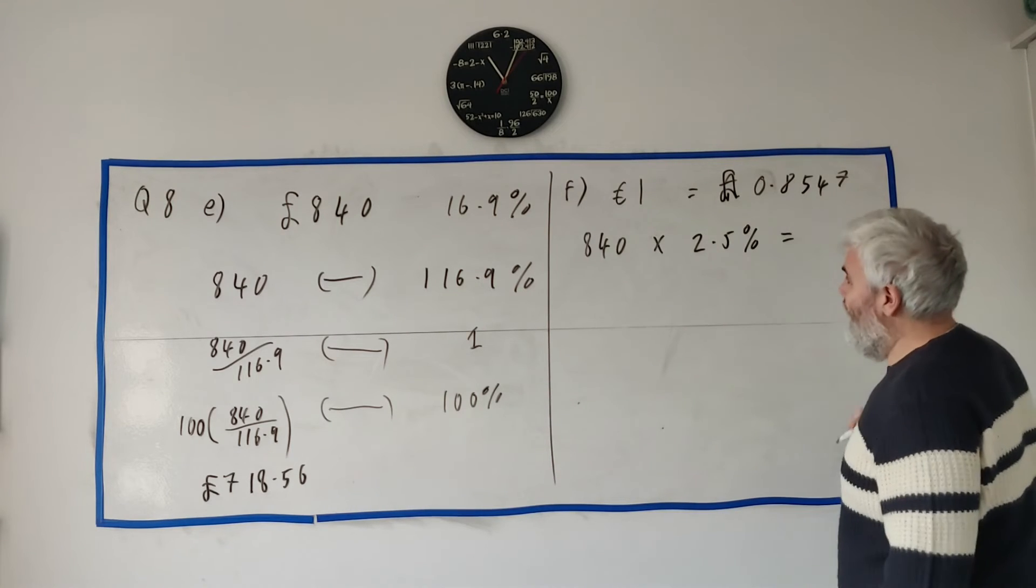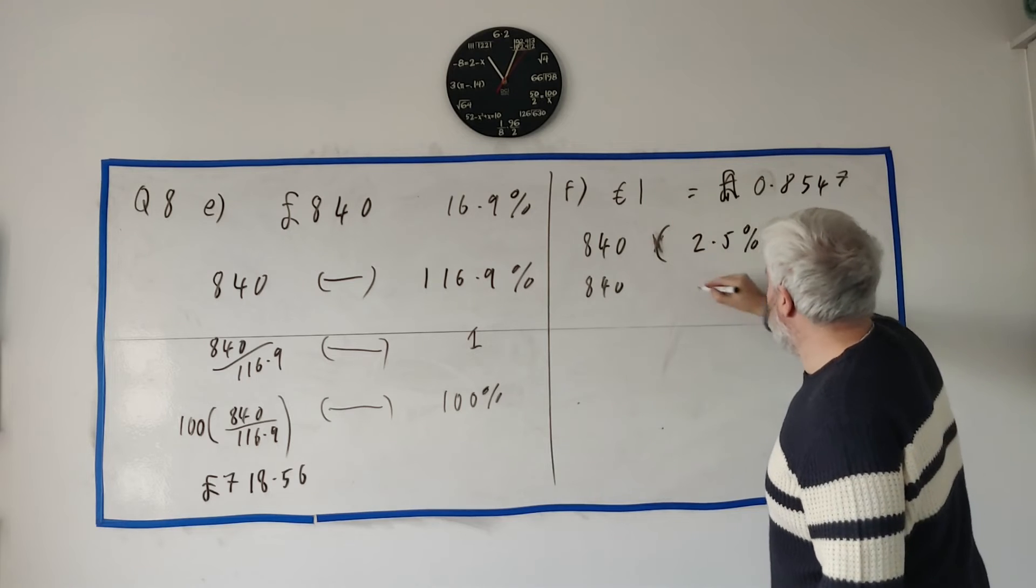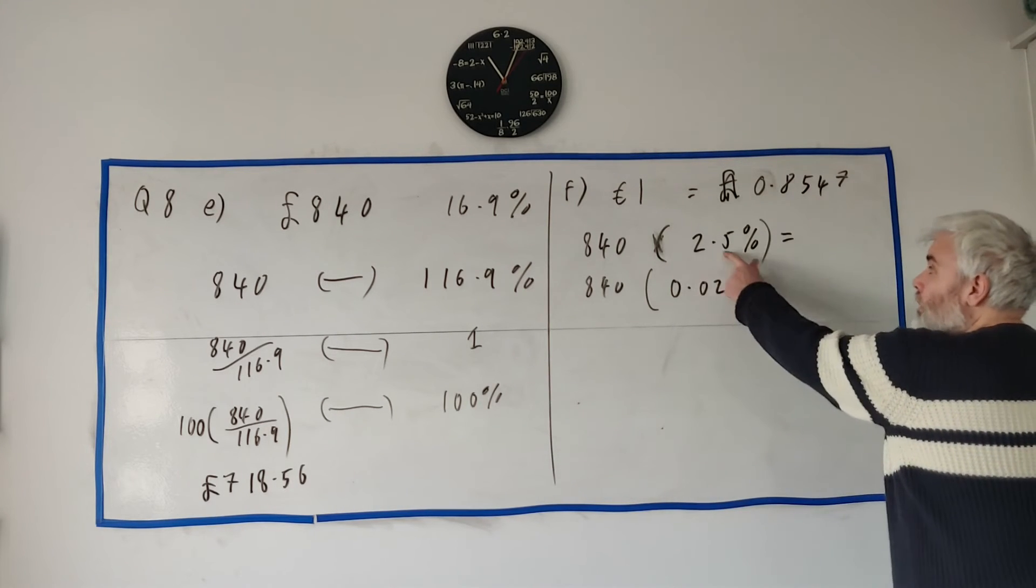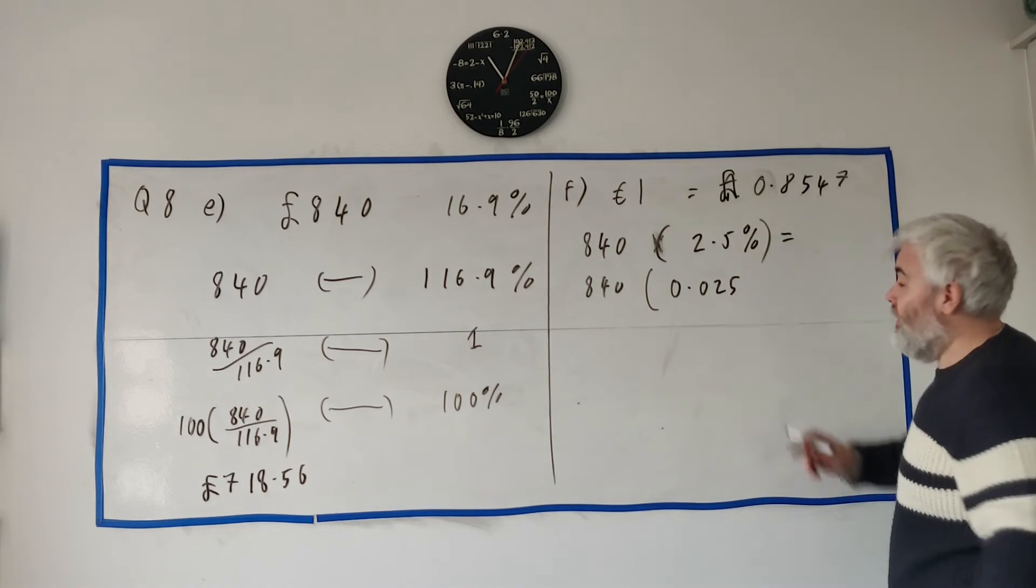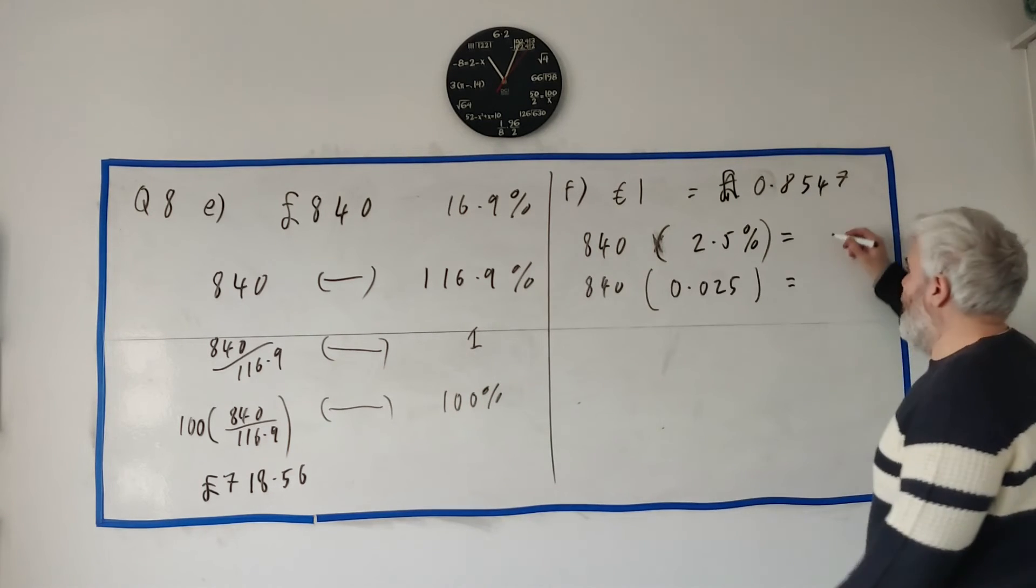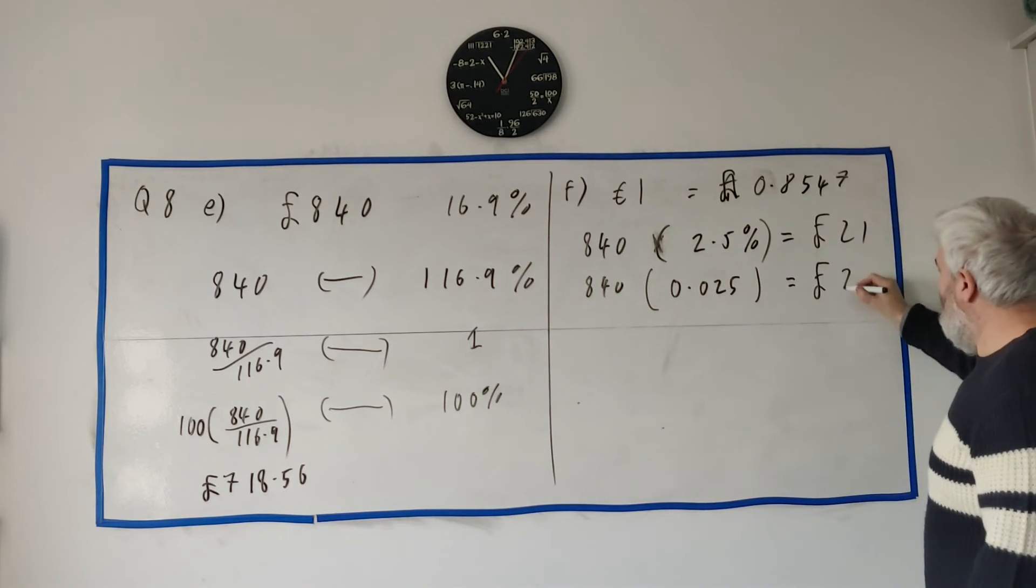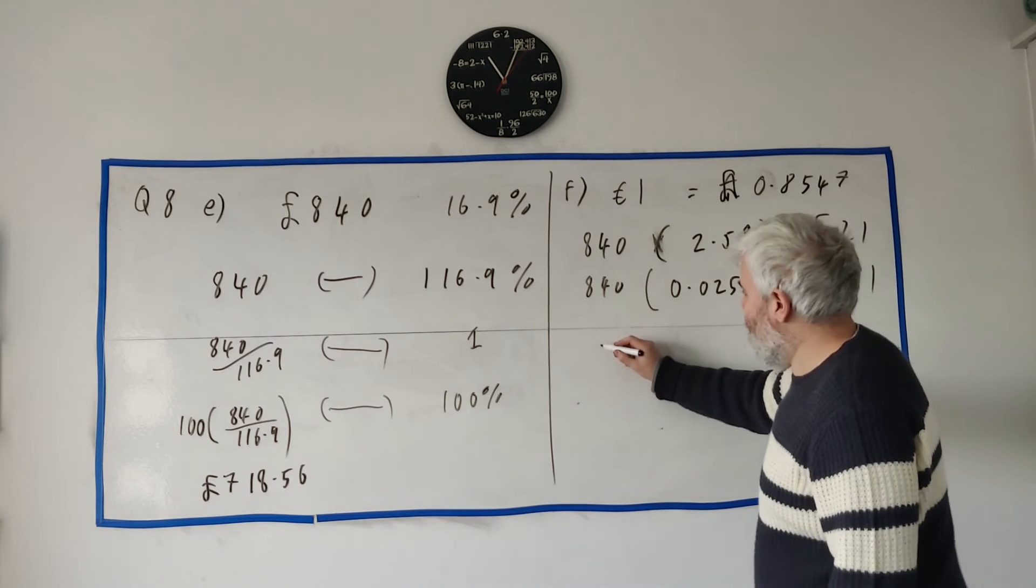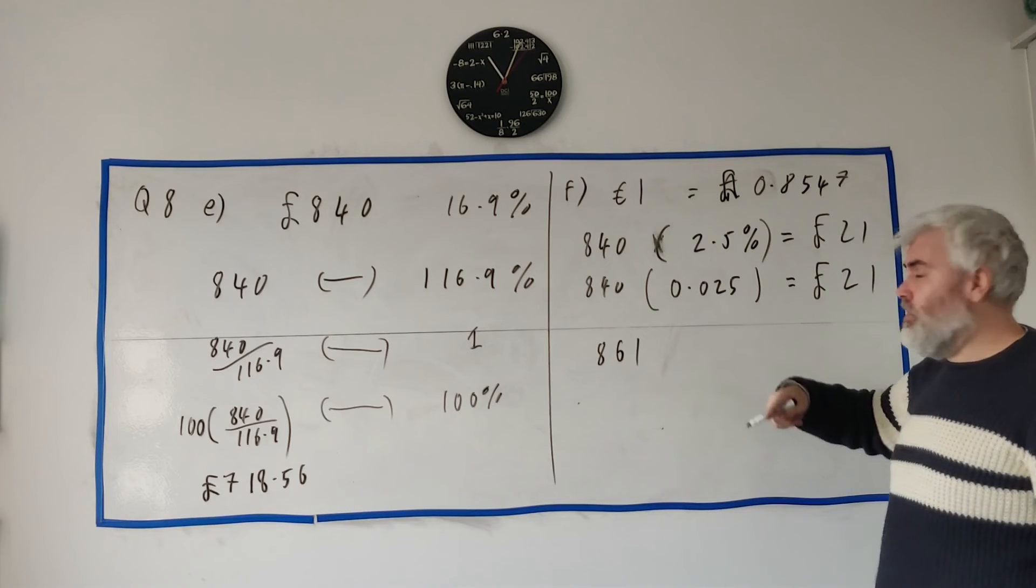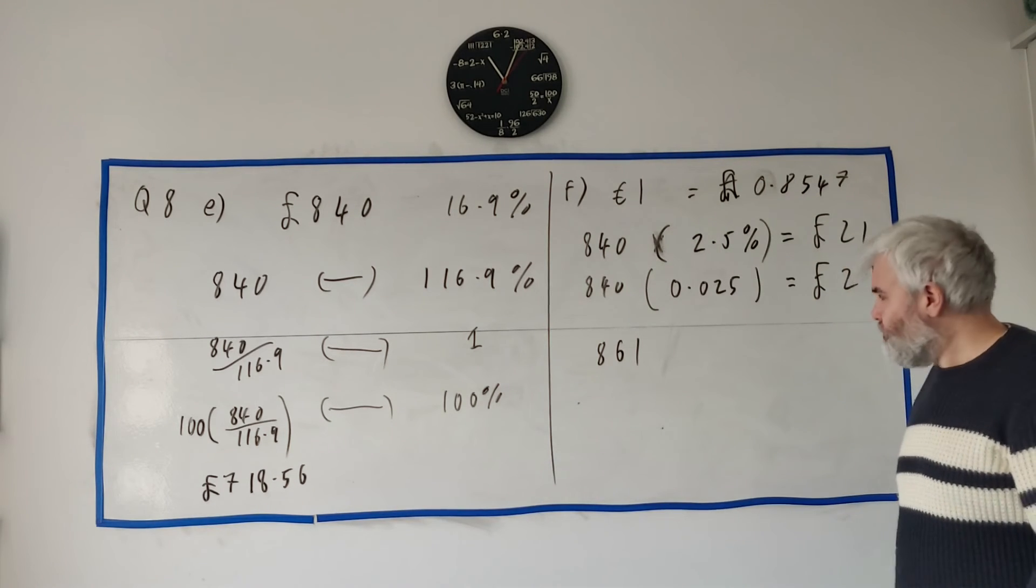840, I'm going to find two and a half percent. So I'm going to multiply by 2.5 percent. Your calculator has a percent button - this will get the right answer - but you might want to change from percent. You might want to use 0.025. These are the same number - 2.5 percent is the same as 0.025, just divided by 100. Either way, if you put this in your calculator and remember to use the percent button, you will get 21 pounds. Then we need to add it on, so that's 840 plus 21, which is 861. That's how much he had to pay after the conversion rate.